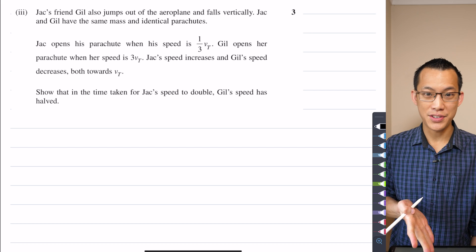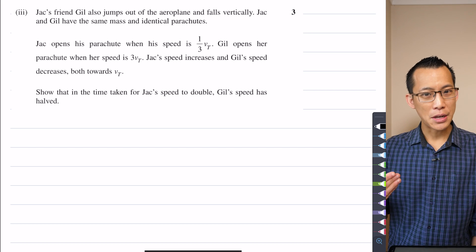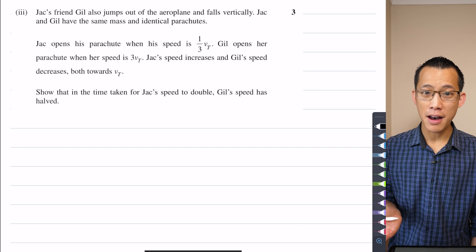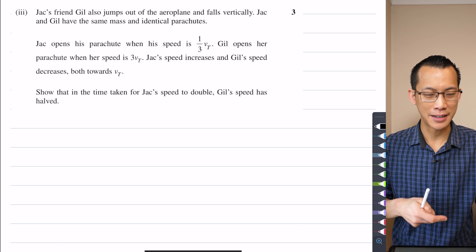if you are doing this question or a question like this in the exam and you're like, I can't get part 2, because they give you that result, you can use part 2 for part 3 even if you haven't proved it. Just invoke part 2 as I'm about to do.